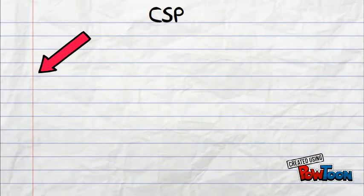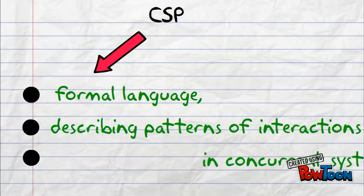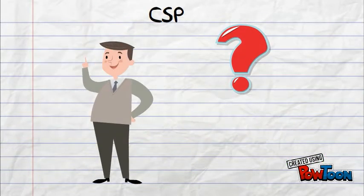CSP itself is a formal language for describing patterns of interaction in concurrent systems. Let's try to understand what does that mean.